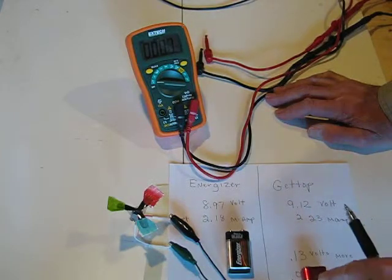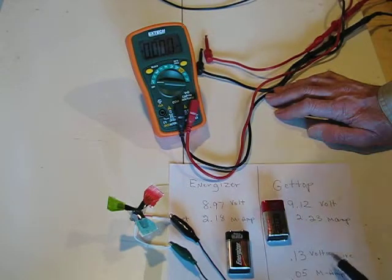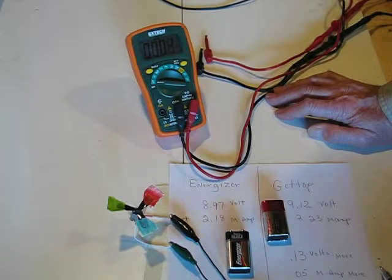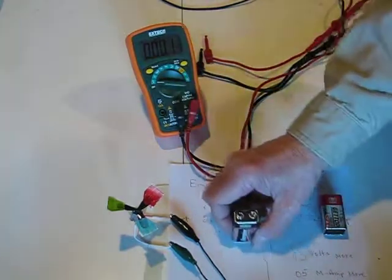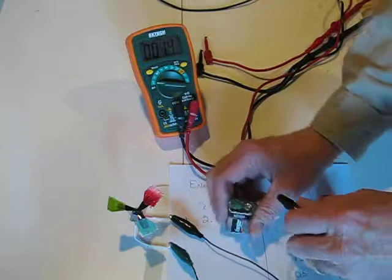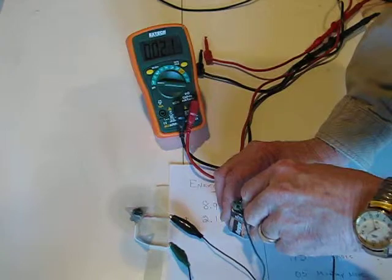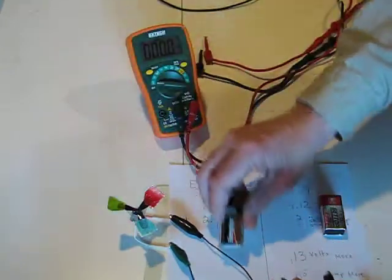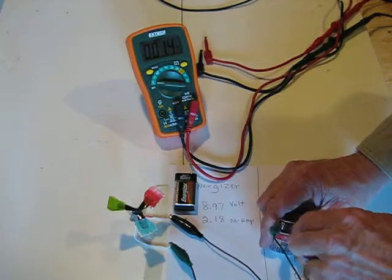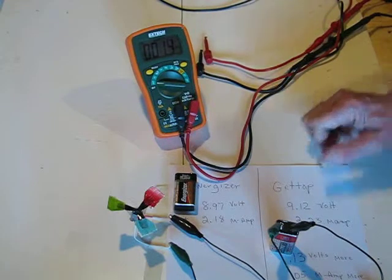This battery is stronger than that one. It has 0.13 more millivolts and 0.05 more milliamps. Okay, DC motor - I put the little fan blades on there just so that you can see that it moves. That little motor quite well. Now that's that one - nothing, absolutely nothing.